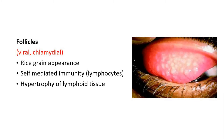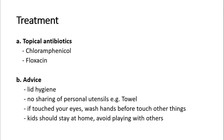Follicles show a rice grain appearance. They are caused by a different immune response — cell-mediated immunity — caused by lymphocytes, unlike the bacterial innate immunity. In follicles, there will be hypertrophy of lymphoid tissue, and they are seen in viral conjunctivitis or chlamydial conjunctivitis. It is important to differentiate papillae versus follicles because it is very helpful in identifying the cause of conjunctivitis and for management purposes.